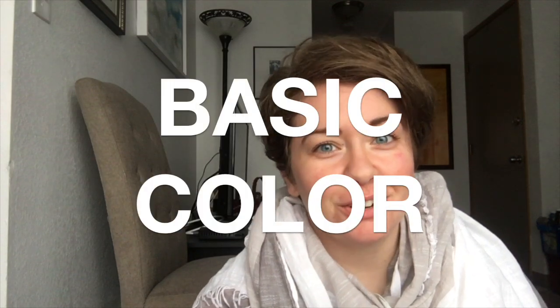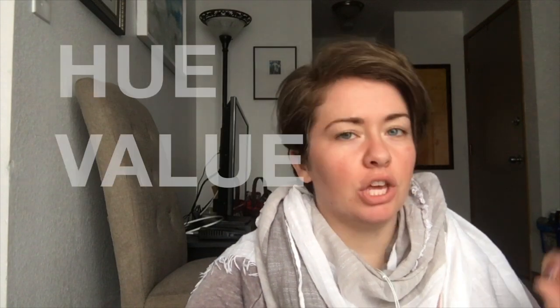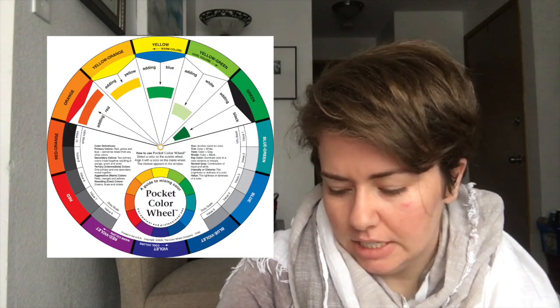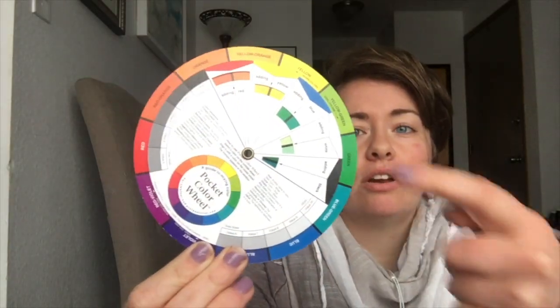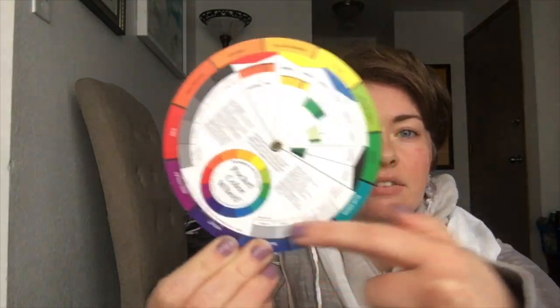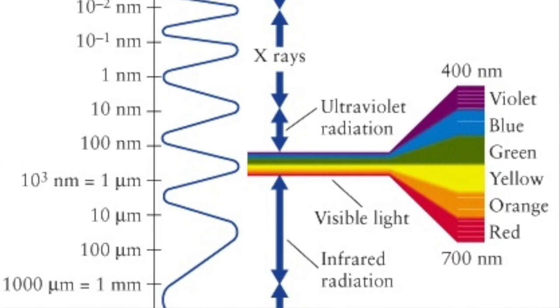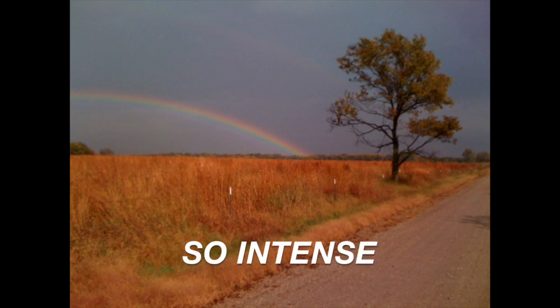Basics of color theory. I'm breaking down some basic color properties today and I'm going to start with hue and value. If you get yourselves a color wheel, the hues are the colors on the outside of this color wheel. Hues are measured in wavelength and temperature. The visible light waves that the naked eye sees — that's the color of the rainbow. Now there are three things to remember about hues.